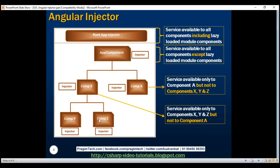Now let's assume a different component needs an instance of that service. Angular first checks its injector — the answer is no. The request bubbles up to its parent, which is app component — again the answer is no. The request bubbles up further to its parent, the root injector — again the answer is no. So this request is going to fail with that famous error: no provider for service.